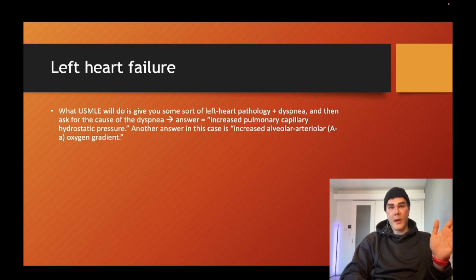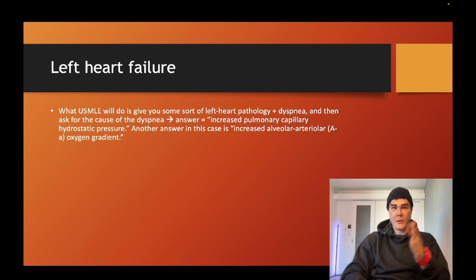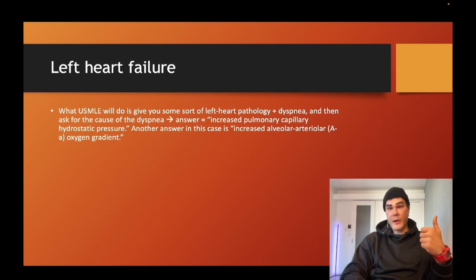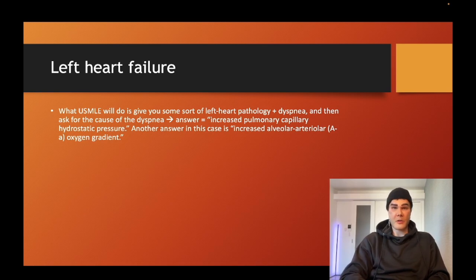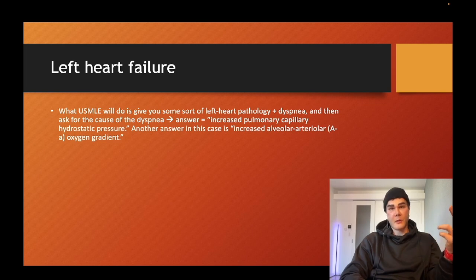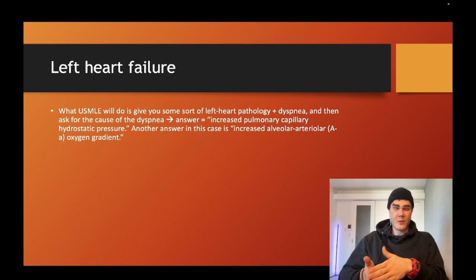There's no such thing as a low A-a gradient — it's either high or just not high. The only scenario for USMLE where you have a normal A-a gradient is hypoventilation: barbiturates, benzodiazepines, opioids. A patient on a ventilator where ventilation is insufficient will also have a normal A-a gradient. If a patient is on opioids and a high A-a gradient is listed as an answer, it's wrong — the patient would have a normal A-a gradient. When hypoventilating, alveolar oxygen is low, arterial oxygen is also low, so the difference is not high.